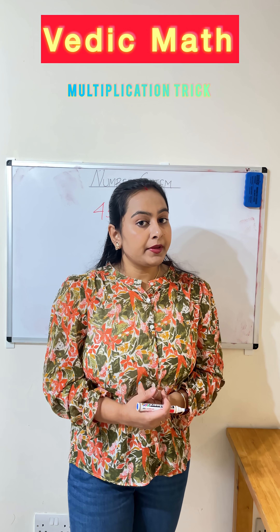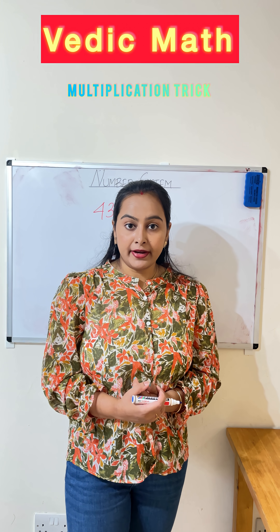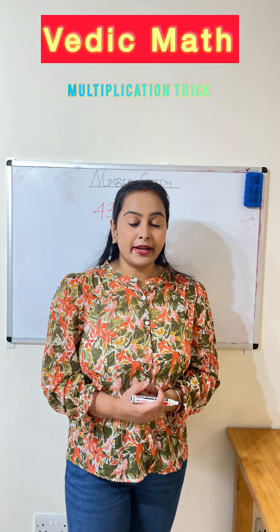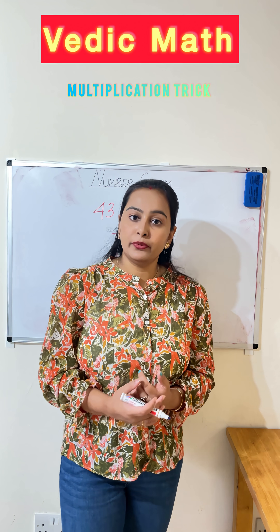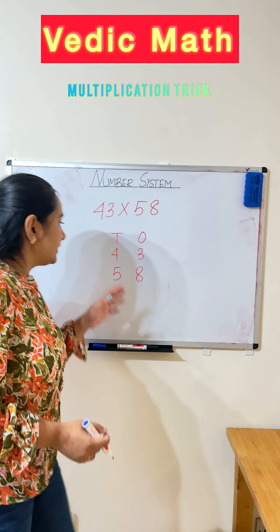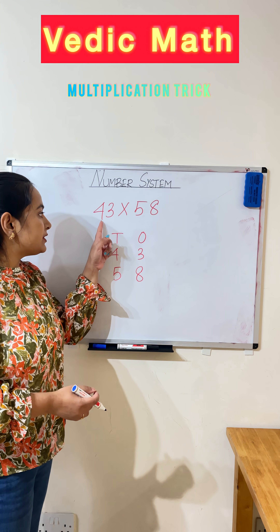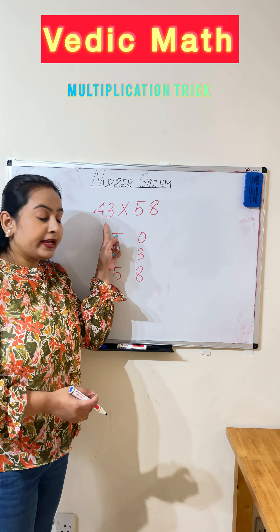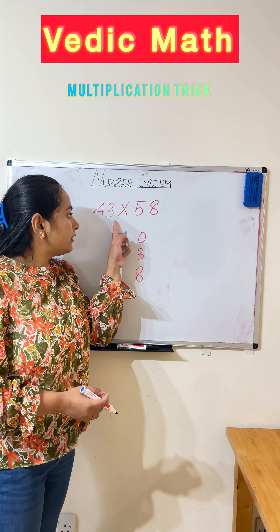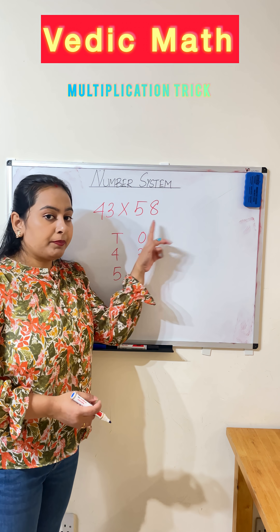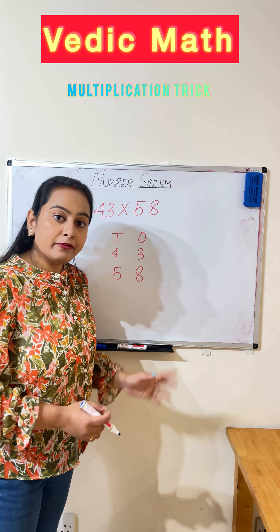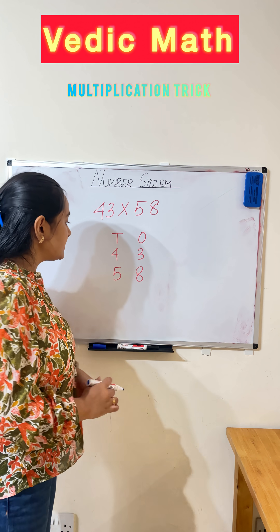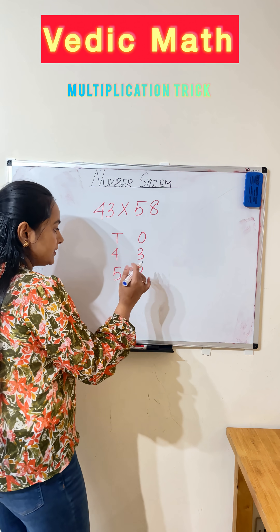Hello, according to Vedic Math, how we can find out the product of any two numbers of two digits? Suppose I have given here 43 into 58. How we can find out these numbers' products?